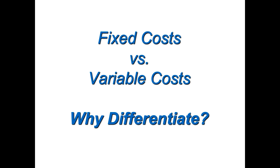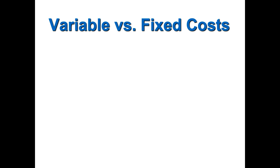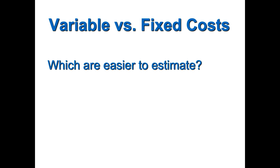So why do we care about differentiating fixed and variable costs? They're all costs — we subtract them from revenues and hopefully get a positive number. The key insight is that variable costs are actually easier to estimate than fixed costs. It might seem like fixed should be easy since they don't change much, but that assumes you know what they are in the first place.